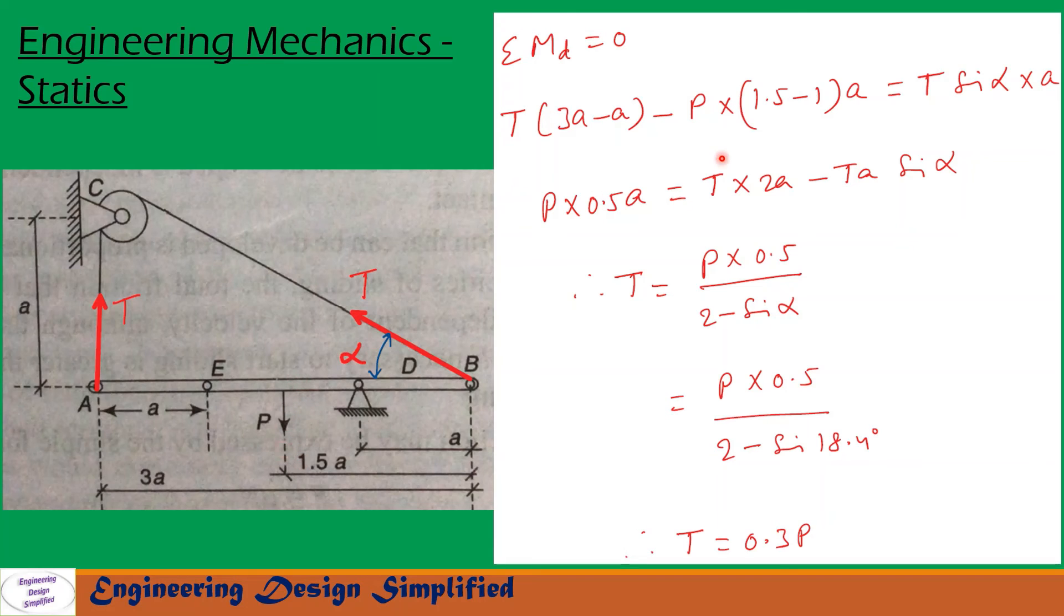Minus P into this distance is 1.5A. So, 1.5A and from here to here is A. Distance from here to here will be 1.5A minus A. So, that is written here P into 1.5 minus 1 into A equal to